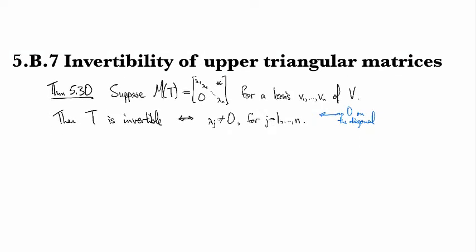All right, so let's go ahead and prove this. For the forward direction, we'll prove this via contrapositive. Suppose one of the lambda_j's is equal to zero.